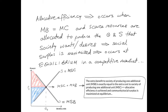Allocative efficiency occurs when the total marginal benefit of consuming a product is equal to the total marginal cost of producing it — the extra benefit of consuming an additional unit equals the extra cost of producing that additional unit. Allocative efficiency occurs when scarce resources are allocated to produce the goods and services that society wants or desires, and social surplus is maximized. This occurs at equilibrium in a competitive market.